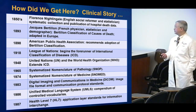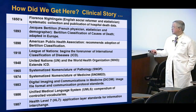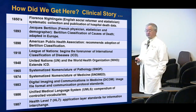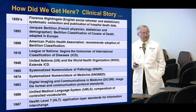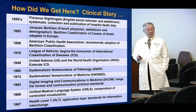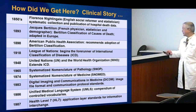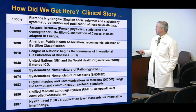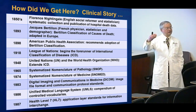Jacques Bertillon is credited with coming up with the first classification of causes of death in 1893. That led to the Bertillon classification, and then the League of Nations came up with the International Classification of Disease, version one. The U.S. is currently on version nine, while the world is on version ten. ICD-11 will be on board in about a year and a half to two years in the rest of the world, while we are just now starting to bring on ICD-10.